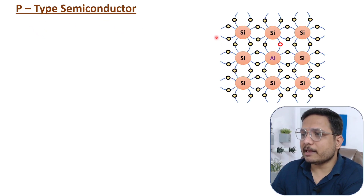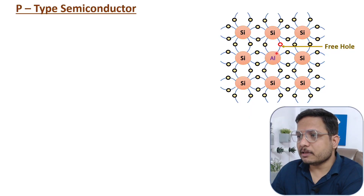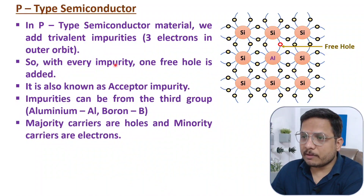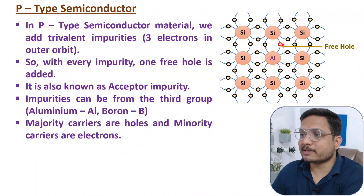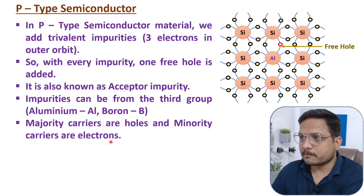Now let us see how P-type semiconductor material works. In P-type semiconductor material, we add trivalent impurities like aluminium. By adding trivalent impurities, we are adding holes — that is, vacant spaces of electrons. With trivalent impurities, three electrons are in the outer orbit, so with every impurity atom added, one free hole is added. This is referred to as acceptor impurity, because holes have the tendency to accept electrons. Impurities can be from Group 3, such as aluminium and boron.